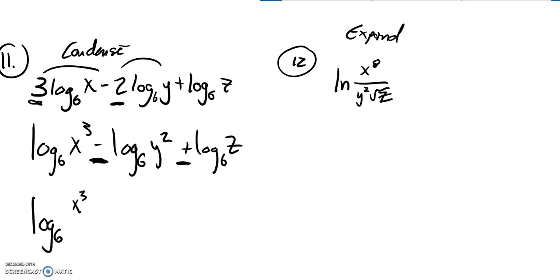And then anything that's positive is numerator. Anything that's negative is denominator. And there it is. So that's condensed.